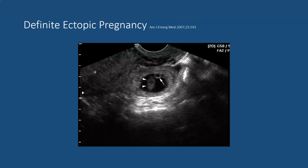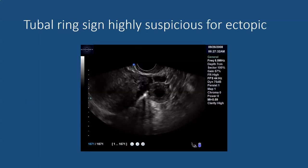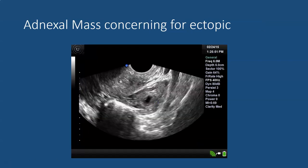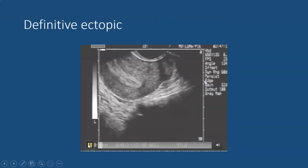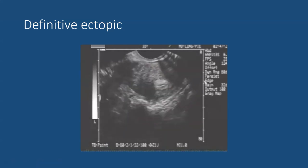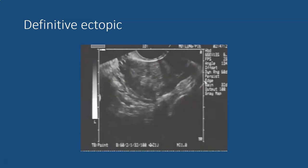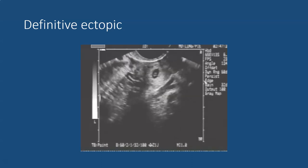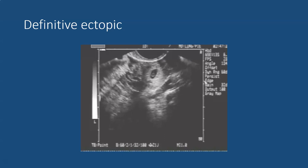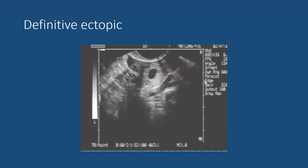Definitive ectopics are called definitive when you can see a clear yolk sac or fetal pole that is not in the uterus. Here is an example of an extra-uterine yolk sac and fetal pole. The tubal ring sign is highly suspicious for ectopic pregnancy — this is a thick echogenic ring structure in the adnexa. Sometimes all that one sees is an adnexal mass that is not definitive but is still concerning and suspicious for an ectopic. In some cases you may not see any adnexal mass at all. In this video clip one can see that the uterus is empty with a thickened endometrium, and as you scan into the adnexa you can see a mass which appears to be an extra-uterine gestational sac containing a yolk sac — this would be a definitive ectopic.